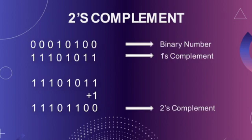Now coming on to 2's complement, there is a simple algorithm to convert a binary number into 2's complement. To get the complement of a binary number, simply invert the given number and add 1 to the least significant bit of the result.